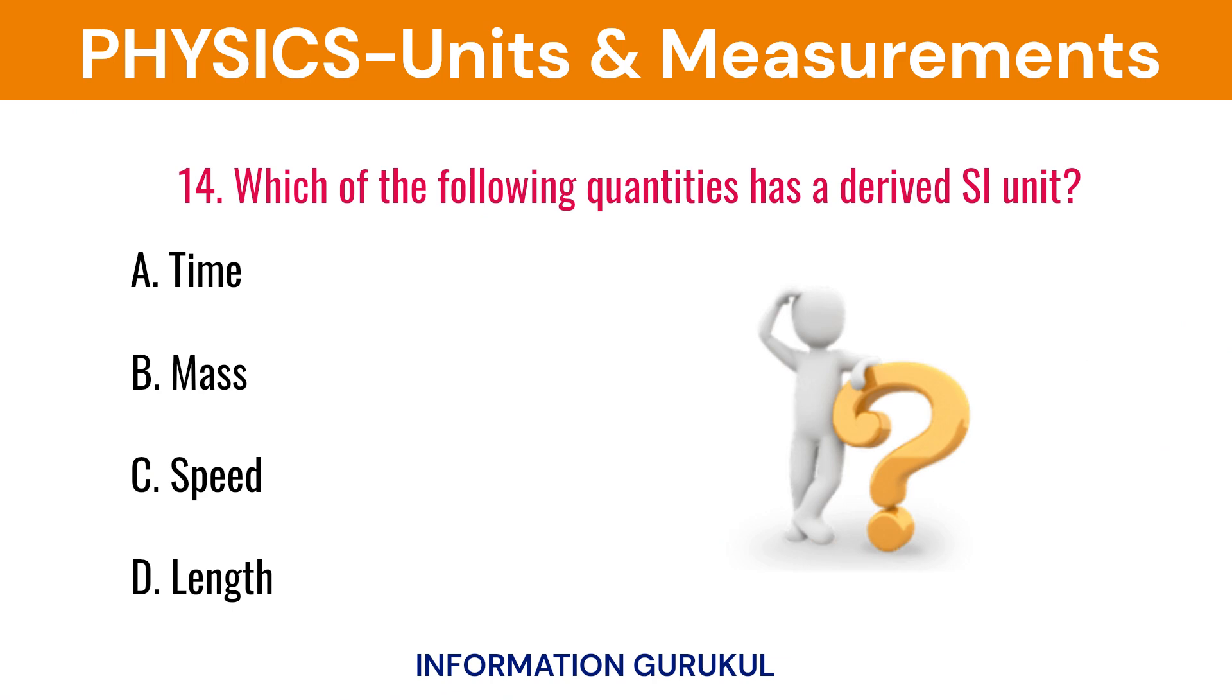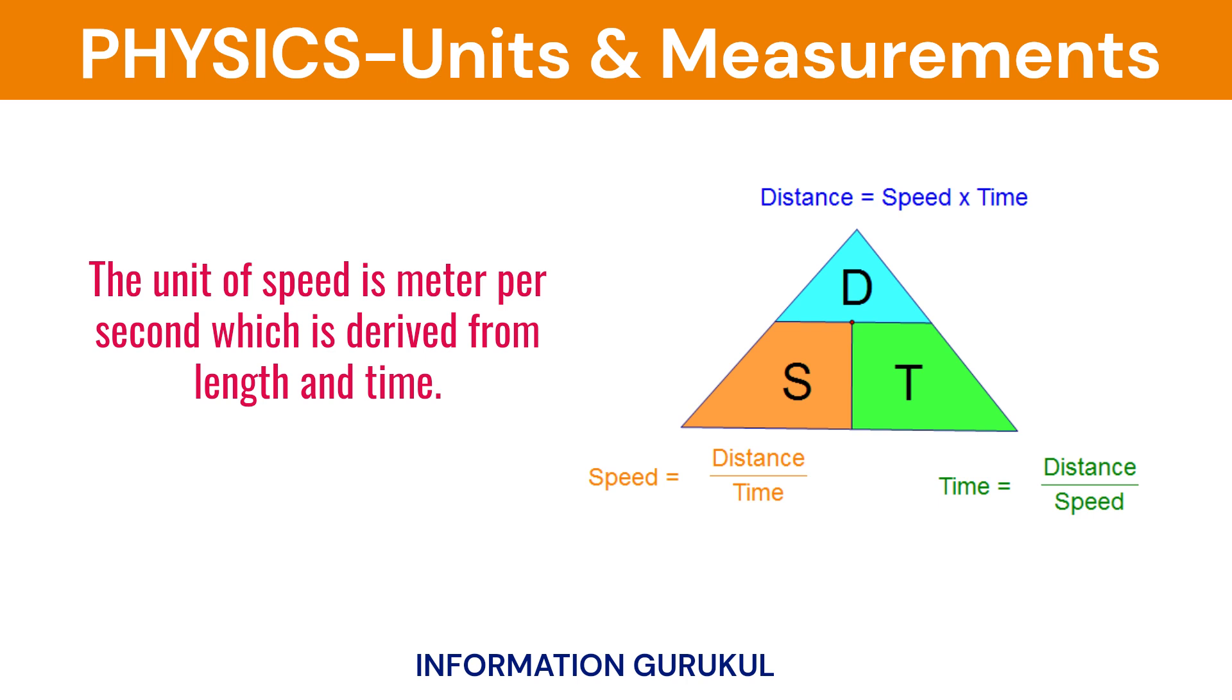Which of the following quantities has a derived SI unit? Speed. The unit of speed is meter per second which is derived from length and time.